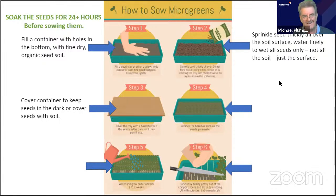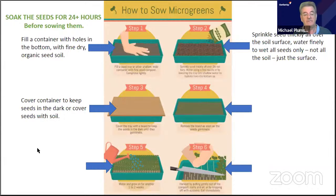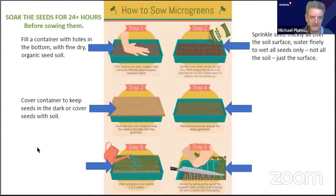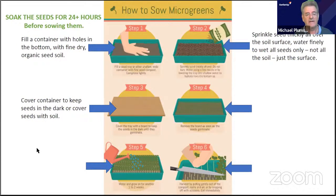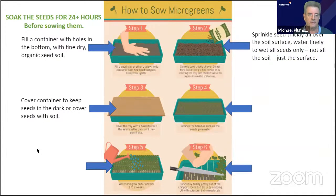There are two ways to create darkness: I sprinkle soil on top of the seed and pat it down, or you leave the seed on top of the soil and put a board or another container on top. Put it in a dark cupboard you don't open often. It needs to stay dark until sprouting — peek every third day to check, and spray if the soil is dry.